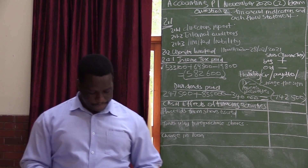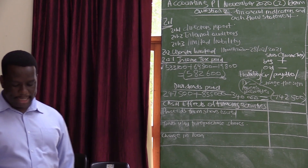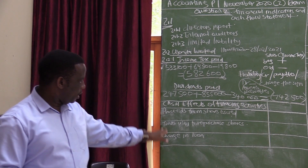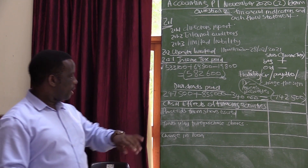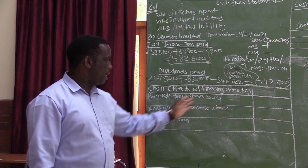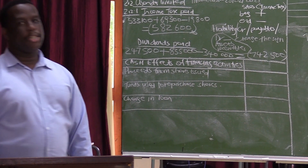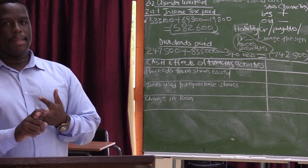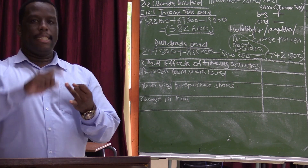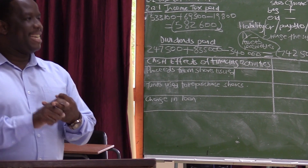The next question requires us to prepare sections of the cash flow statement. We will discuss the details on the left-hand side. The cash flow statement is made up of three stages: cash flows from operating activities, cash flows from investing activities, and cash flows from financing activities.